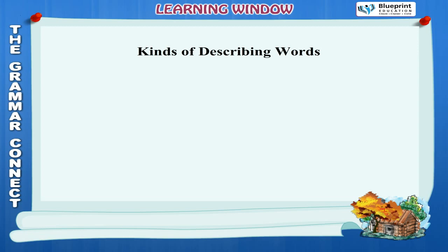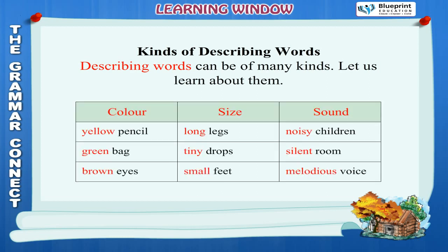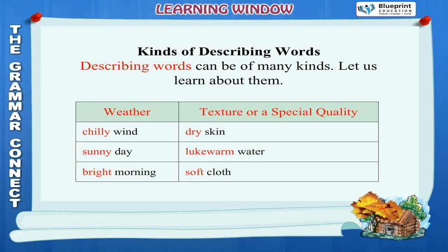Kinds of describing words: Describing words can be of many kinds. Color: Yellow pencil, green bag, brown eyes. Size: Long legs, tiny drops, small feet. Sound: Noisy children, silent room, melodious voice. Shape: Rectangular garden, round face, square table. Number: Three windows, two eyes, many insects. Taste: Salty chips, bitter medicine, sweet candy.